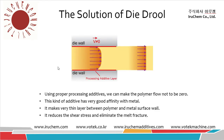I would like to tell you about the solution for die drool. We need to ensure the flow rate is not zero — this is the key point. We use a proper processing additive so that the flow rate at this position is not zero, making a similar speed profile throughout. This kind of processing additive has a very good affinity with metals, and it makes a layer between the molten polymer and the metal surface. It reduces shear stress and eliminates melt fracture, which is one cause of the cleaving or tearing of the edges.